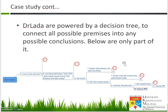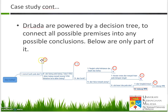Dr. Ladder is actually an app powered by a decision tree to connect all possible premises into any possible conclusion. For example, if he starts with 'daun kuning' (yellowish leaves), he will be asked if there is any rhizomorph. And if there is, the conclusion will be that the disease is number three, and so on.